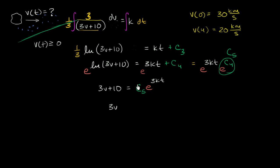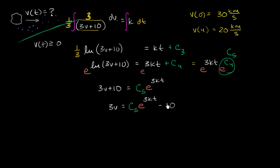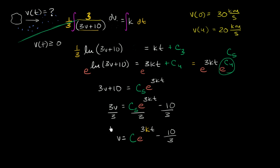Subtracting 10 from both sides gives 3V = C5 · e^(3KT) − 10. Dividing everything by 3, and renaming C5/3 as simply C, I get the general solution: V = C · e^(3KT) − 10/3. Now I can leverage the data points I have to solve for C and K.